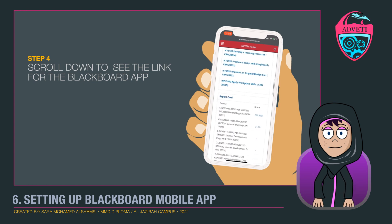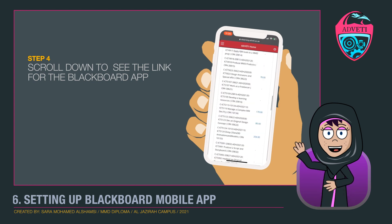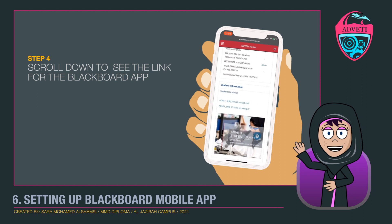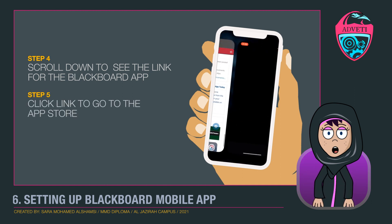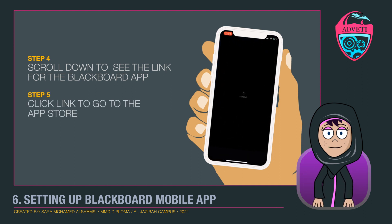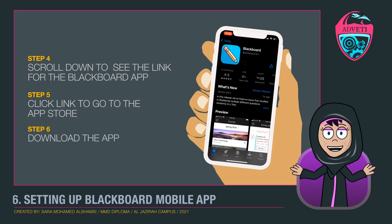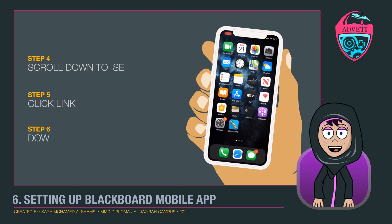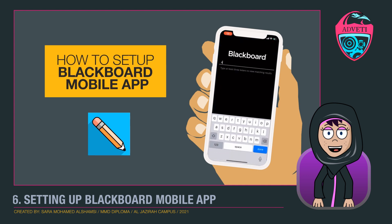Scroll down until you see 'Download Blackboard Student App Today.' If you have an iPhone, press download on the App Store. If you have a Samsung, use Google Play. Then go directly to download.